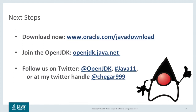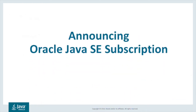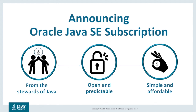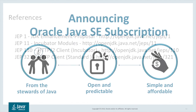You can download Java 11 now at this URL. Please join us at OpenJDK or follow us on Twitter at @OpenJDK or hashtag Java11. My own Twitter handle is @Chegger999. Oracle is the steward of Java, providing a large amount of development engineering funding for the Java SE platform and OpenJDK. Oracle provides leading-class Premier support for a low cost that's easy to purchase with simple pricing tiers. Thank you for watching.